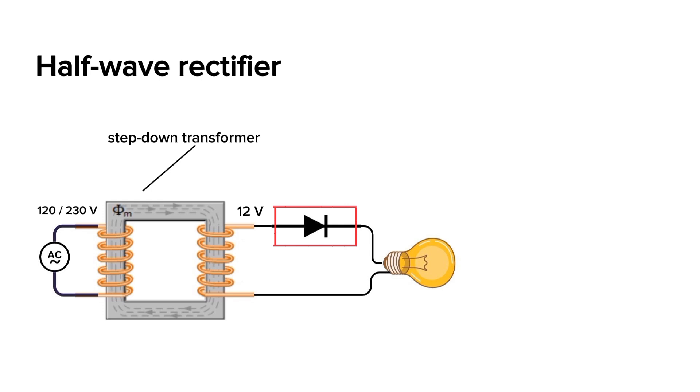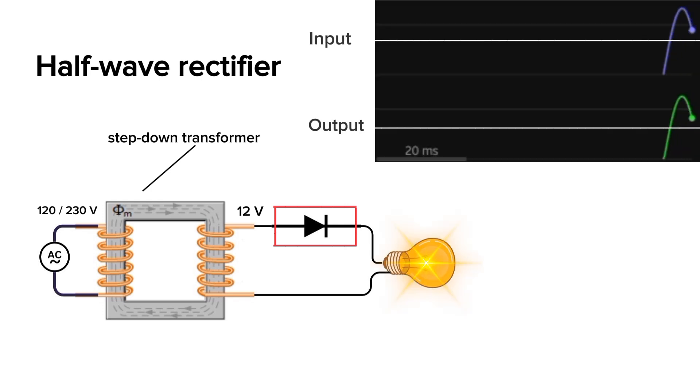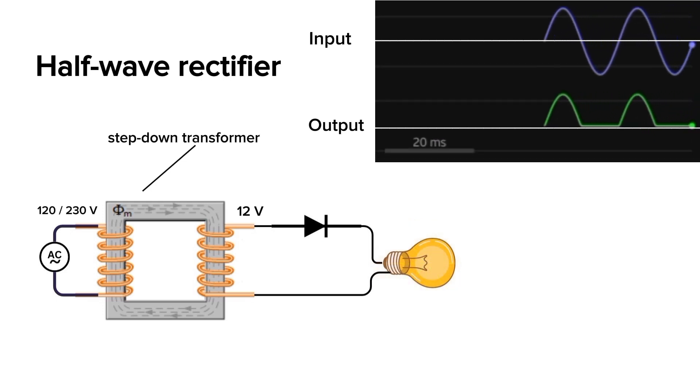Only one diode is connected in series with the load in this circuit. This diode allows current to flow in one direction, resulting in a pulsating waveform because it only rectifies the positive half of the AC sine wave and blocks the negative half. Therefore, it's called a half-wave rectifier. The output is technically DC because the current doesn't change its direction. We can improve the output by adding a capacitor in parallel with the load.